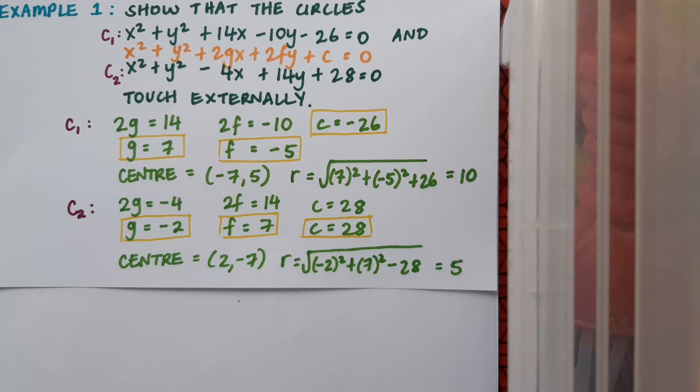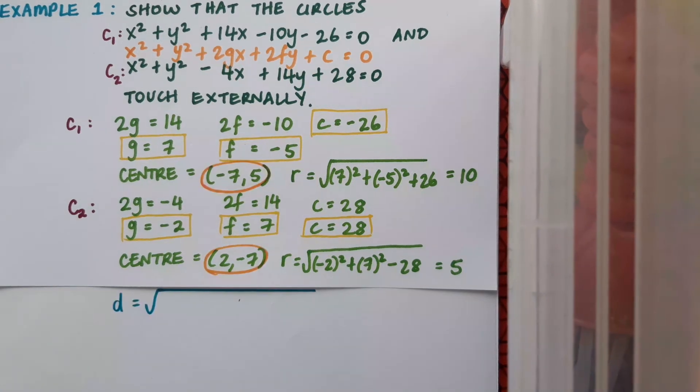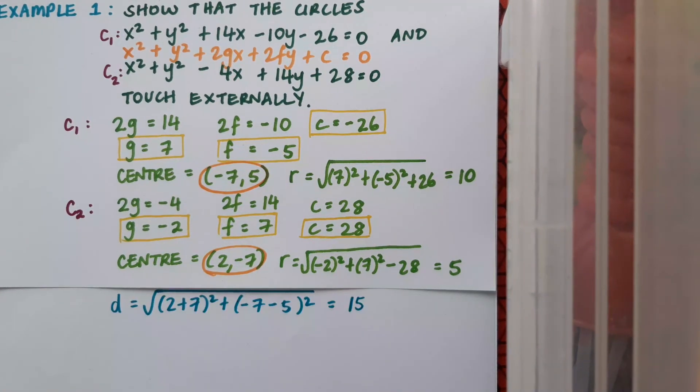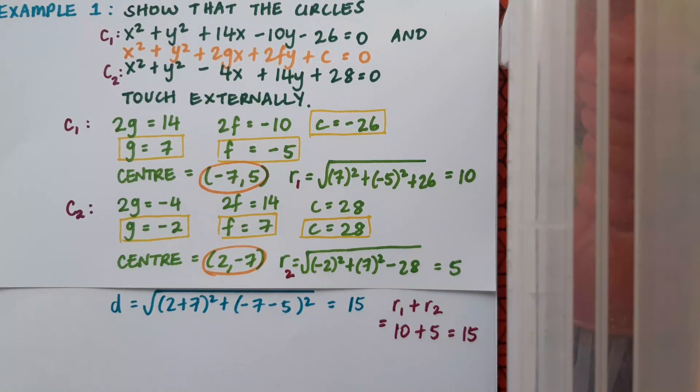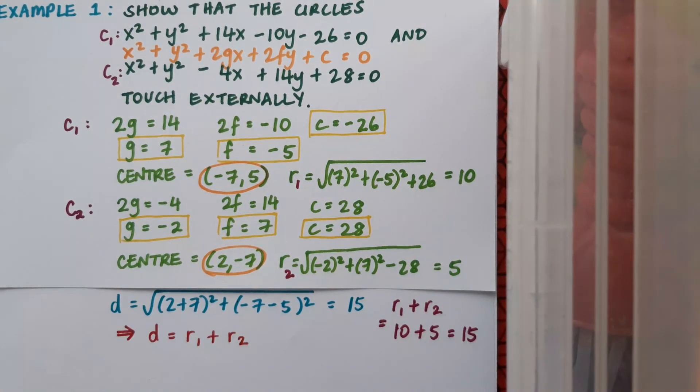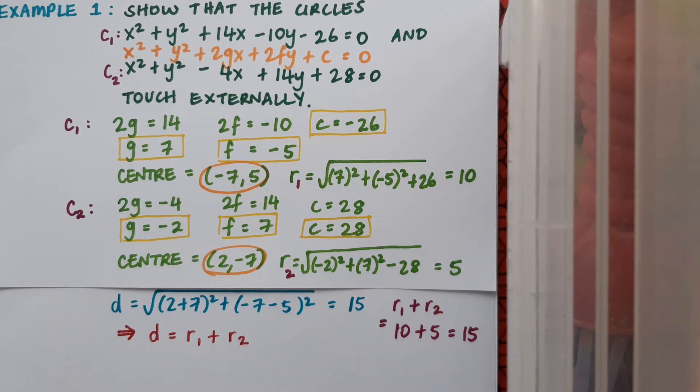So now I'll find the distance between the two centres and when I fill this formula in I get an answer of 15. Note that my 2 radii add to 15. So I'll conclude by saying that this implies that d equals r1 plus r2 and so therefore the circles touch externally.